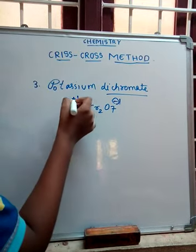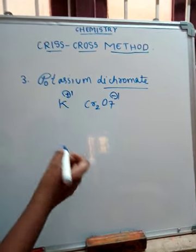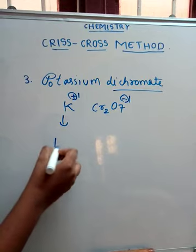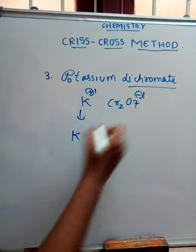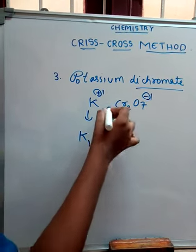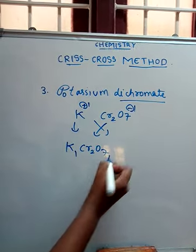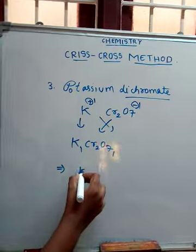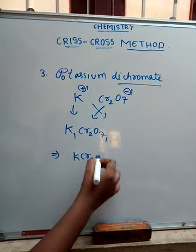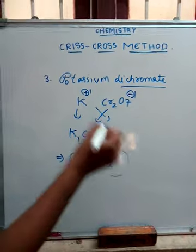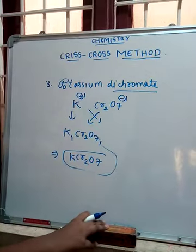Now, ignore the charges, the plus and minus signs. Write K as it is here. K gets 1. Next, Cr2O7 gets 1 here. So, the formula is K Cr2O7 for potassium dichromate. This is easy. Thank you.